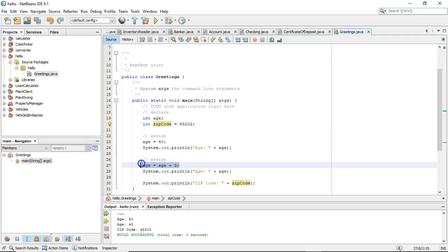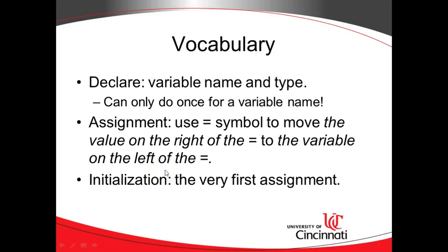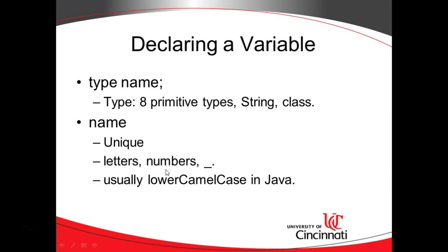We also looked at assigning a variable and using mathematical computations for assignment. When declaring a variable, we need the type and then the name. The type can be any one of eight primitive types — byte, short, int, long, double, float, boolean, and char. We can also use String, which is a special type representing multiple letters or numbers, and we can also use a class as a type.